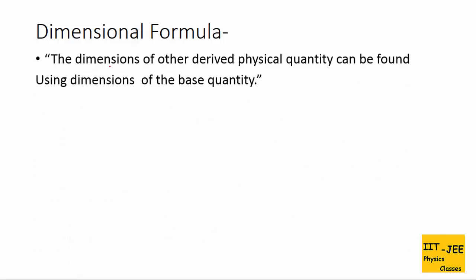Next is dimensional formula. The dimension of other derived physical quantities can be found using dimensions of base quantities. For example, velocity is a derived quantity. We can find its dimension using base quantities by applying the formula: displacement over time, that is D over T.